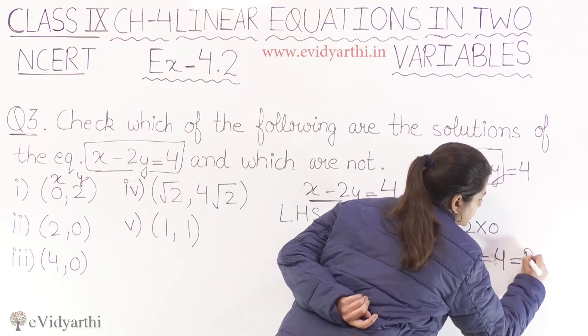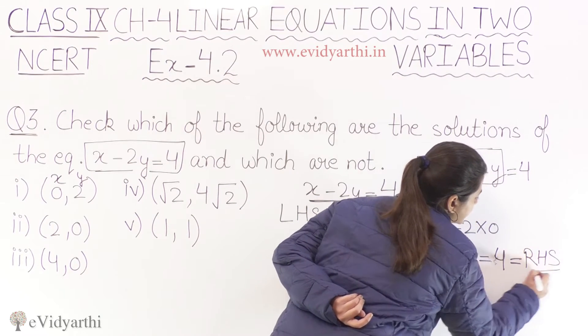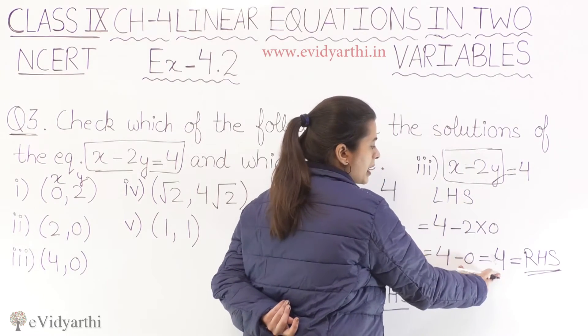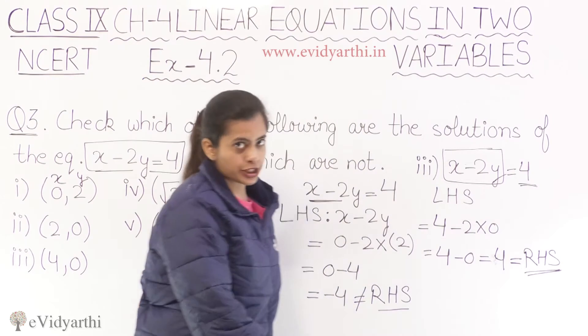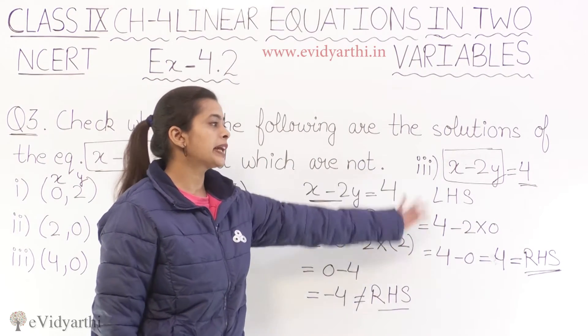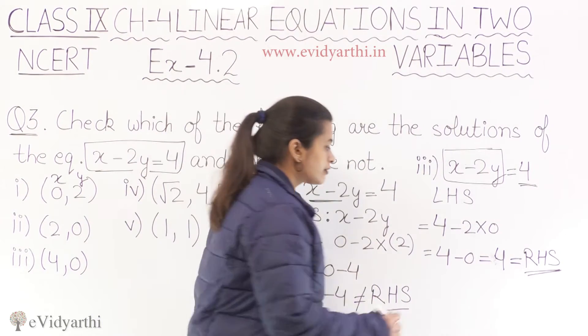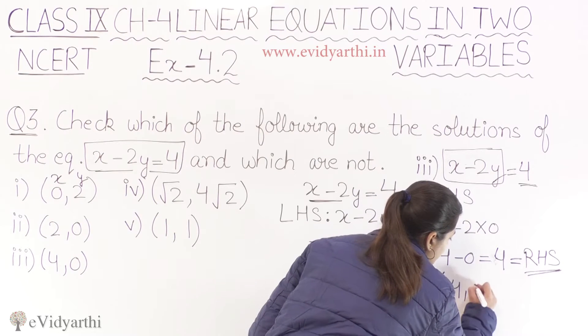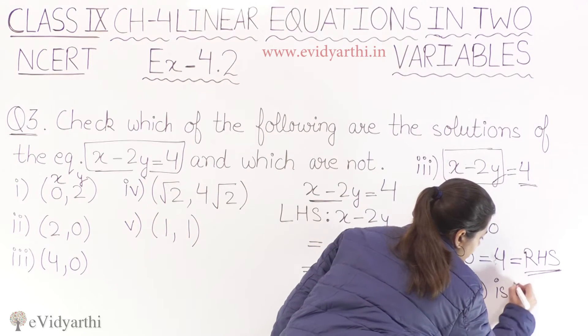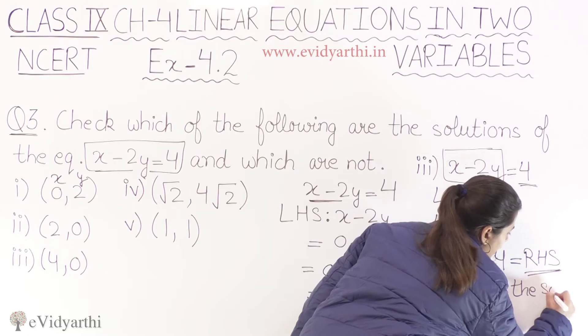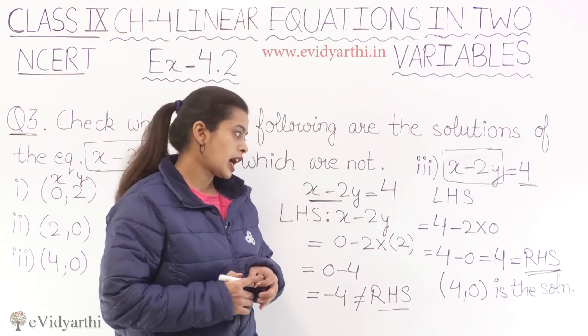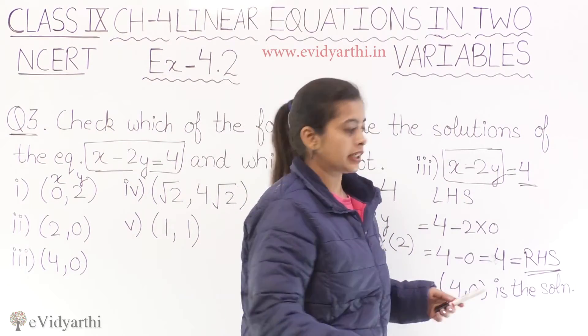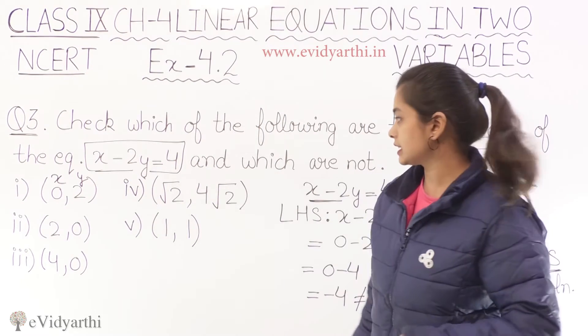So this four is equals to our right hand side term. Yeh jo humara left side se four aagya hai, yeh humara right side se match karta hai. Isi liye hum third part ke liye kya paayenge? That four and zero is the solution. Yeh humara equation ka solution hai. Is tarike se aapko inko answer dena hai. Chalo aap proceed karte iske next part ke saath.